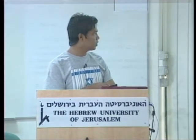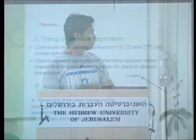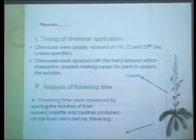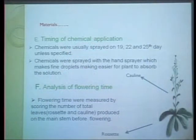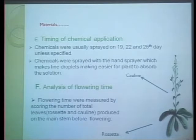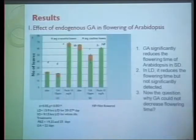Flowering time was measured based on the total number of leaves the plant produced before flowering — including both cotyledon leaves and rosette leaves. It was not based on the number of days.